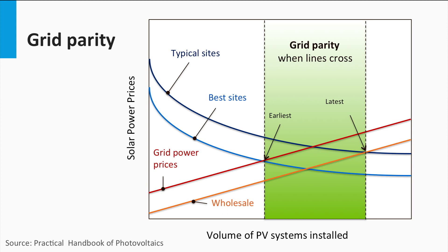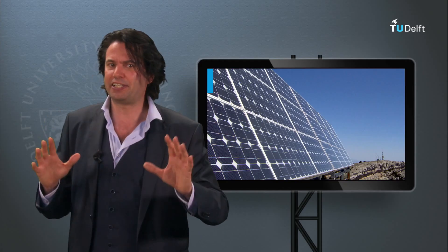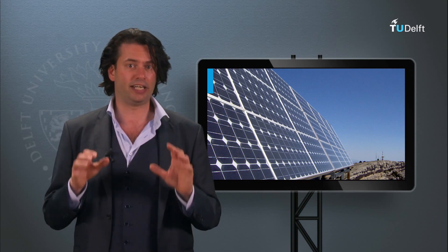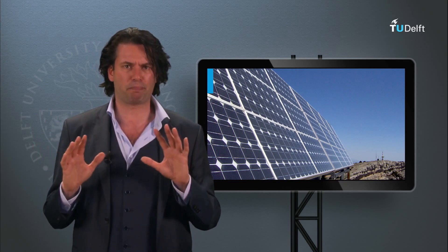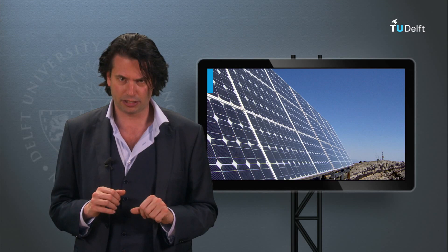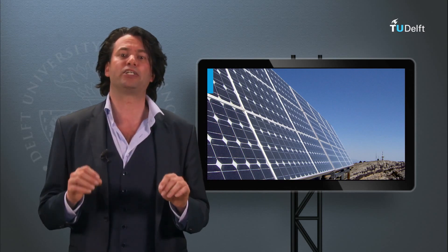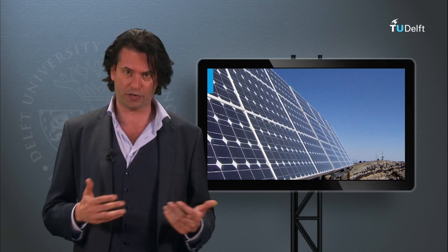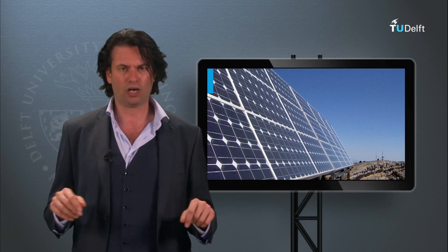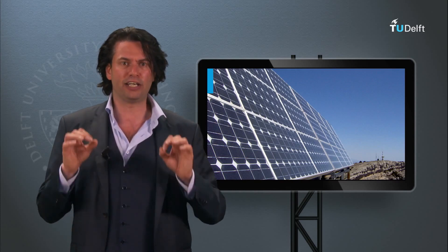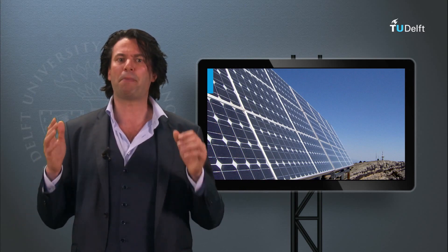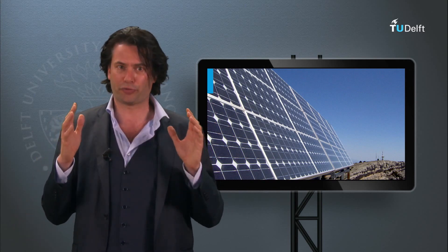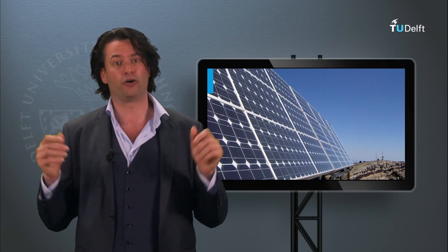Grid parity occurs when the solar and grid lines in the graph cross. Of course, the grid parity could be reached faster with the help of incentives and subsidies. However, a school of thought disregards such a grid parity that has occurred with the aid of subsidies. It is said that the true grid parity is when the PV power prices would fall below the grid prices without any subsidies. Solar grid parity without subsidies is a much rarer phenomenon, at least right now. As an example, PV power producers already claimed grid parity in the sunny country of Spain earlier in the year.